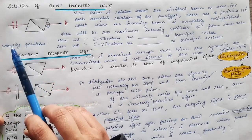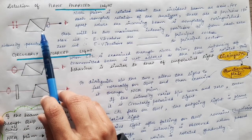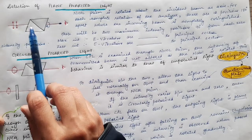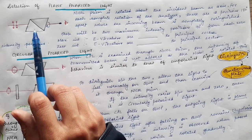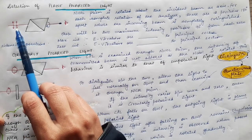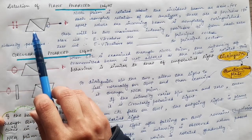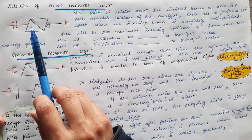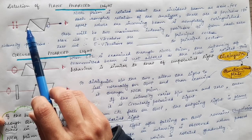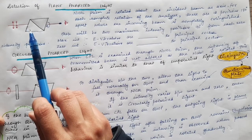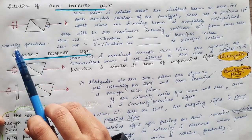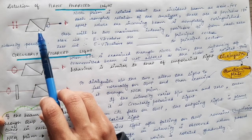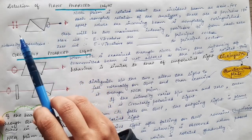We make this light fall on the Nicol prism. One important thing to keep in mind: when the vibrations of the electric field are perpendicular to the principal section of the Nicol prism, that component of light is blocked by the prism. This is because the O-ray, which has its vibrations perpendicular to the principal section, is blocked by the Nicol prism — so vibrations perpendicular to the principal section are completely blocked and no light is transmitted.